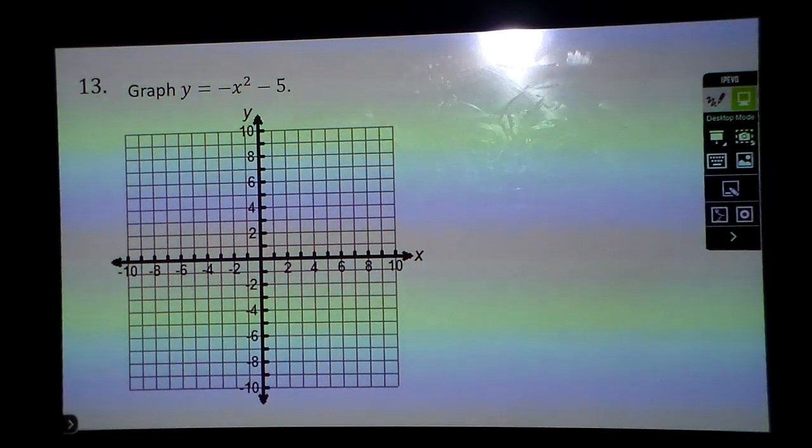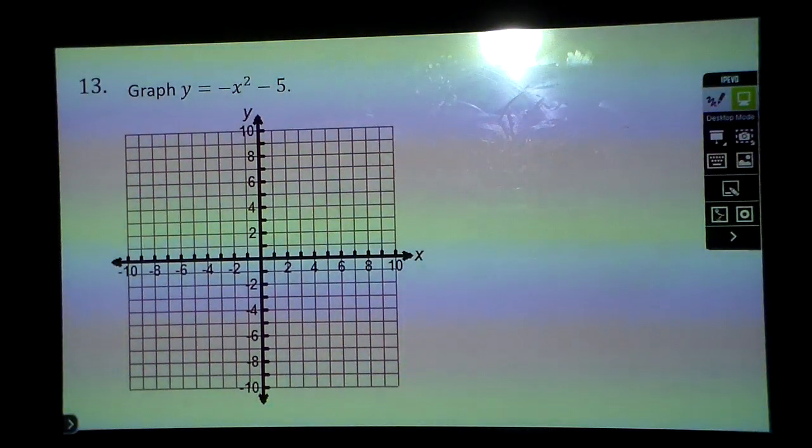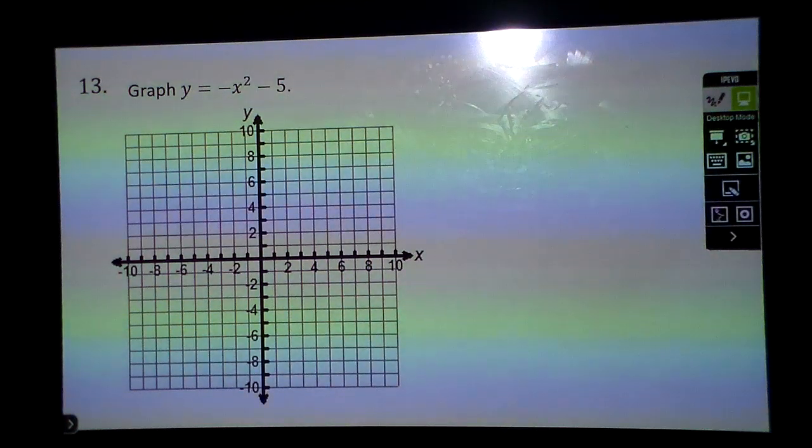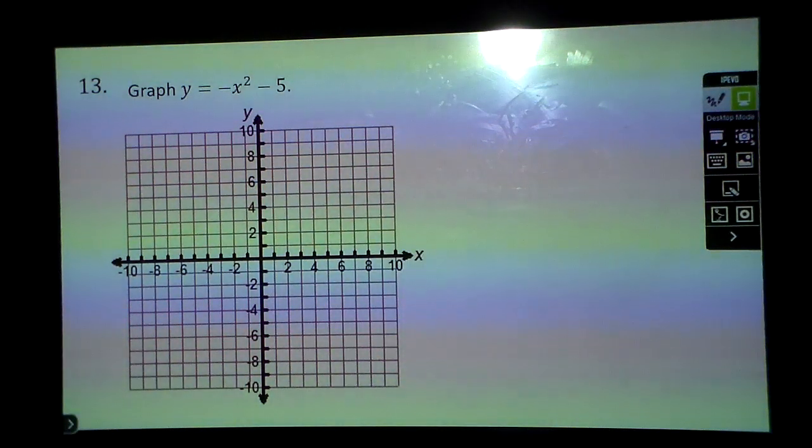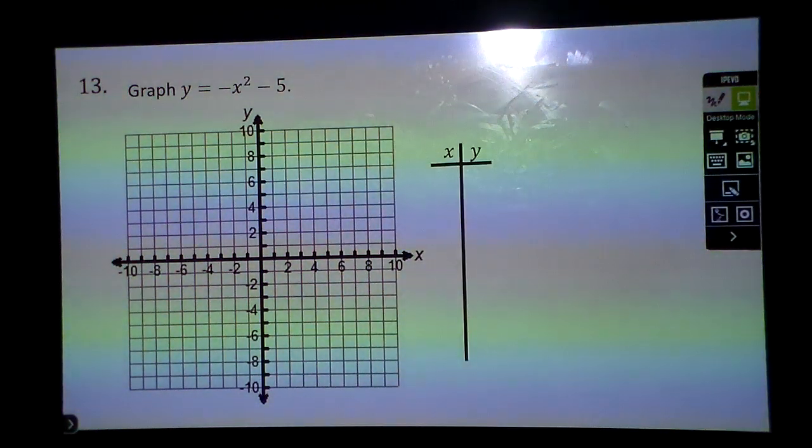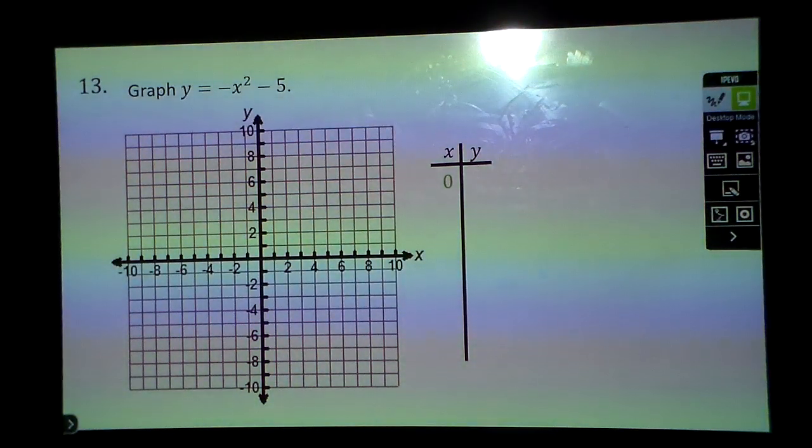Let's graph this equation. One thing we can do is easily plot some points if you don't know what the graph looks like. If you know what it looks like, it's a quadratic turned upside down and vertically shifted down 5, but probably the easiest thing to do is to put some points in.